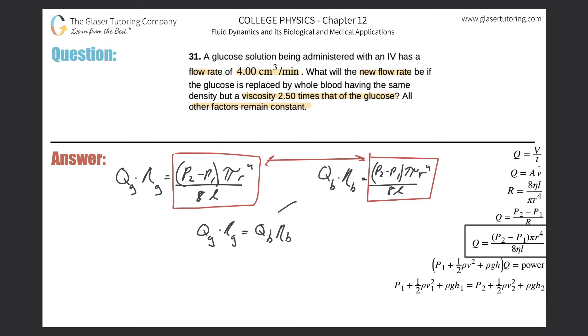Now they wanted us to find the new flow rate so they want us to find the flow rate of blood, q sub b. So divide out the viscosity from both sides. So now we're going to have the flow rate of whole blood will equal the flow rate of glucose multiplied by the viscosity of that glucose all divided by then the viscosity of whole blood.